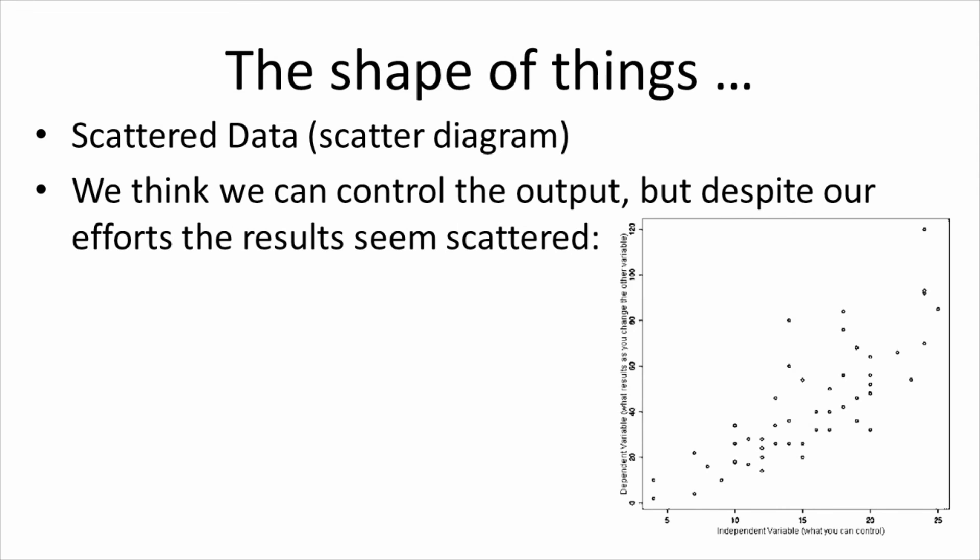Imagine a situation where you think we can control one variable by controlling something else. We think there is a relationship between these two things. But when we collect the data, the results seem scattered. If we plot this data, it results in what is called a scatter diagram. Here we see the independent variable, the thing we think we can control, the thing that is independent of other factors. That is plotted on the horizontal axis, or what is typically called the x-axis. The dependent variable, the result, the output that depends on the thing that we are controlling, that is plotted on the vertical axis, or what is typically called the y-axis.